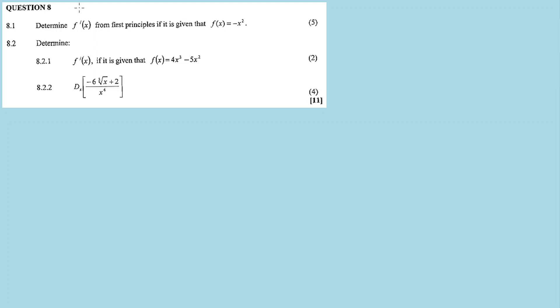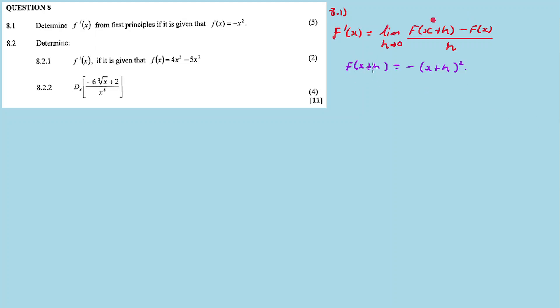So 8.1: find f'(x) from first principles if f(x) = -x². For 8.1, f'(x) is equal to the limit as h approaches zero of that expression: f(x+h) minus f(x), everything divided by h. So I will isolate f(x+h) and simplify before doing the actual calculation.